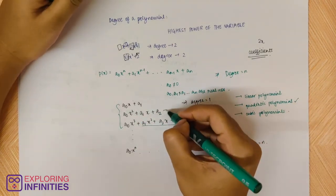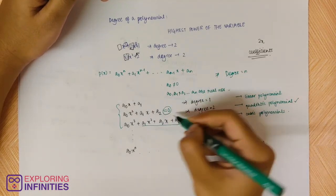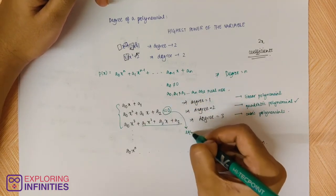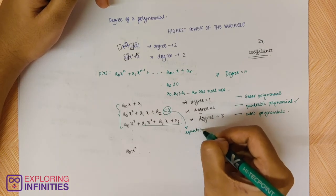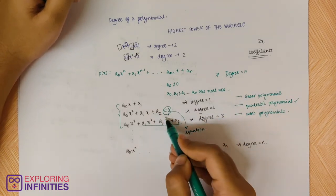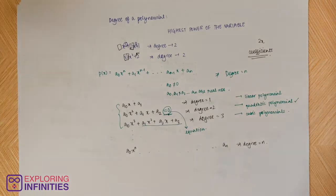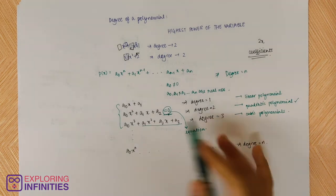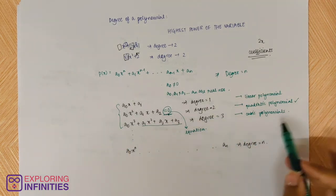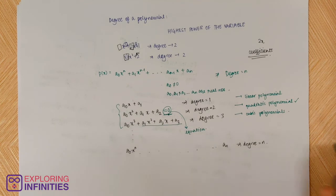Basically, if you set the polynomial equal to 0, it becomes an equation because you are equating it with something. You'll learn a lot about quadratic equations in the coming chapters, but right now all you have to remember is: degree 2 is a quadratic polynomial, degree 3 is a cubic polynomial, and degree 1 is a linear polynomial.